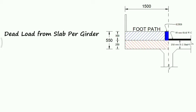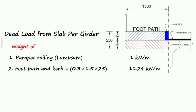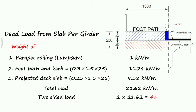Dead load from the slab per girder: the weight from the parapet railing is taken as a lump sum of 1 kN/m. The footpath and curb is 0.3 (depth of curb) × 1.5 (width) × 25 (unit weight), giving 11.24 kN/m. The projected deck slab is 0.25 × 1.5 × 25, giving 9.38 kN/m. Total load on one side is 21.62 kN/m. Considering both sides, the two-sided load is 43.24 kN/m.